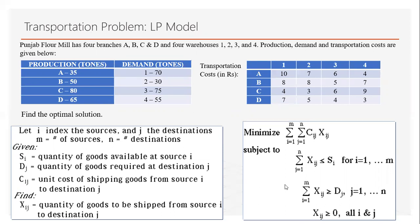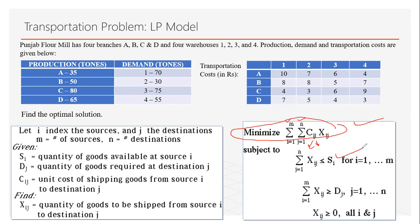That is our objective function — we want to minimize the total transportation cost, where I represents the source and J represents the destination. We have M sources and N destinations, and from every source we can transport products to a destination. We have two constraints: one is the capacity constraint from the supplier, and another is the demand constraint.